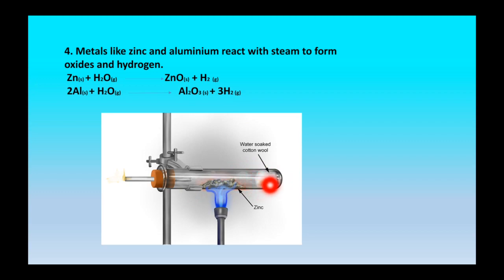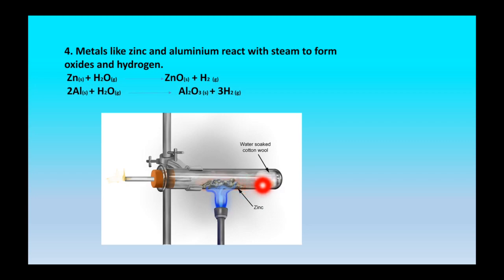In the picture, a test tube contains zinc metal with a cotton plug soaked in water. When the test tube is heated, water vapour comes out from the cotton plug, reacts with the zinc, and zinc oxide is formed. There is also an outlet shown for the hydrogen gas produced.